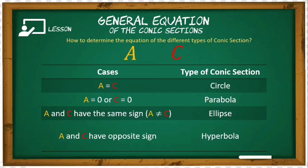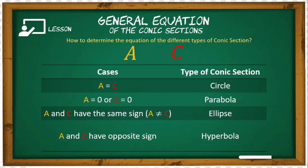For the third case: if a and c have the same sign — both positive or both negative — but a is not equal to c, meaning their numerical values are different, for example a is 2 and c is 5, they are both positive but 2 is not equal to 5 — therefore the equation represents an ellipse.